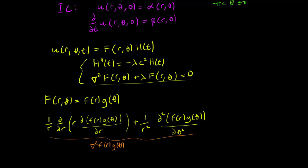And then we have to add the lambda term. So we have plus λf(r)g(θ) = 0. This is basically a rewriting of the equation.